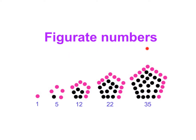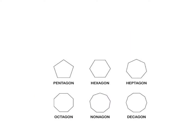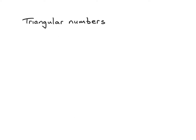Hi, in this video we are going to look at figurate numbers. Figurate numbers are numbers that can be represented by drawing dots in the form of regular geometrical shapes. Some regular geometrical shapes include triangles, squares, pentagons, hexagons, heptagons, octagons, and so on.